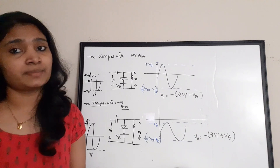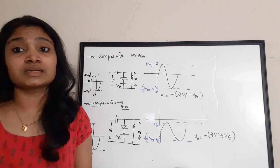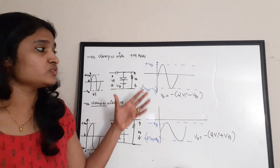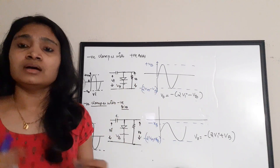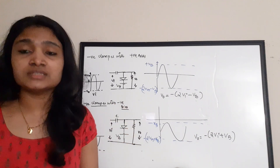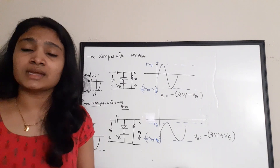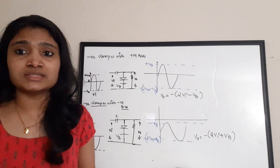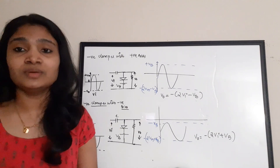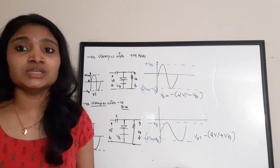These are the basic categories of clamper questions along with their output waveforms and equations — just knowing these is enough to answer 90% of the questions. These types of questions can appear in ISRO exams, GATE exams, or any competitive electronics examination. I hope this video was useful for your preparation. Please give it a thumbs up, share it with friends, and subscribe to the channel for more videos.